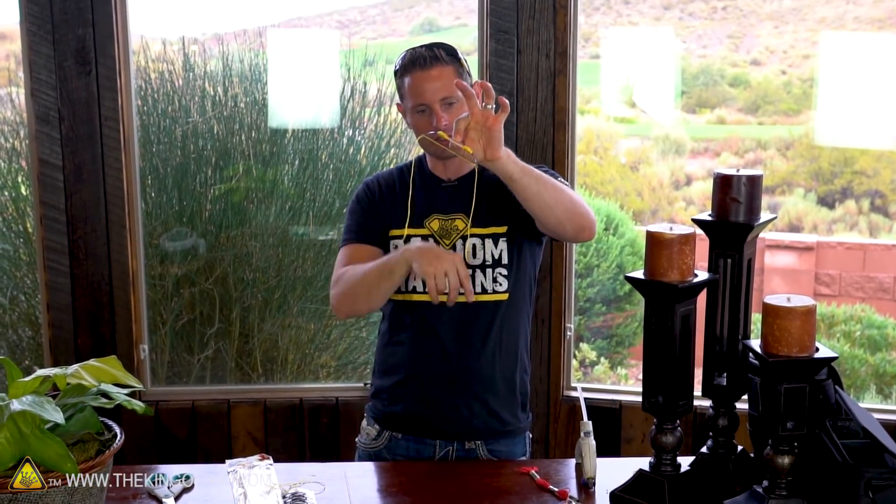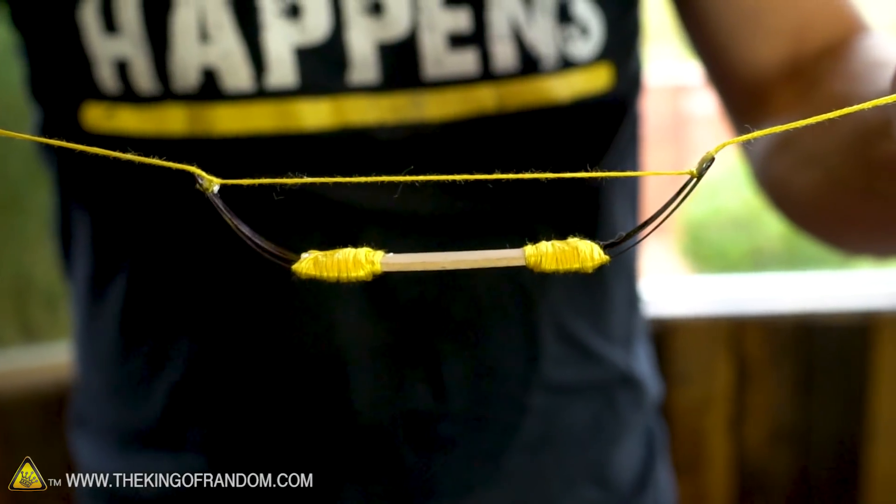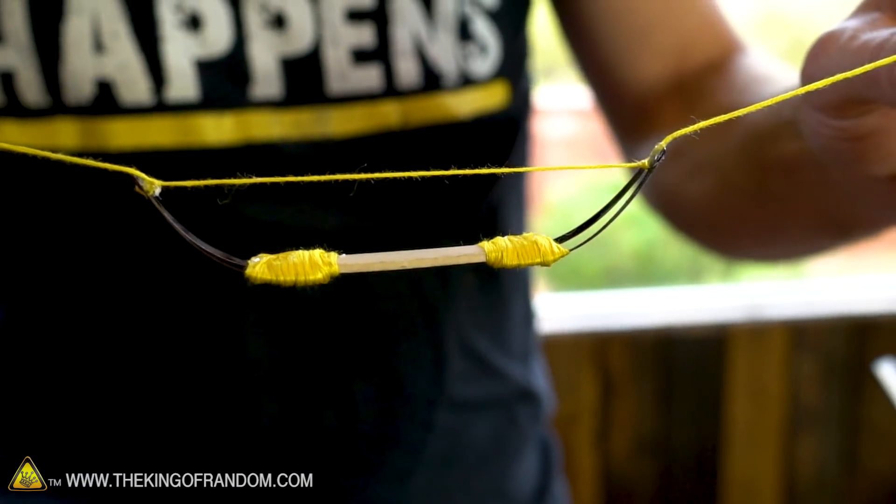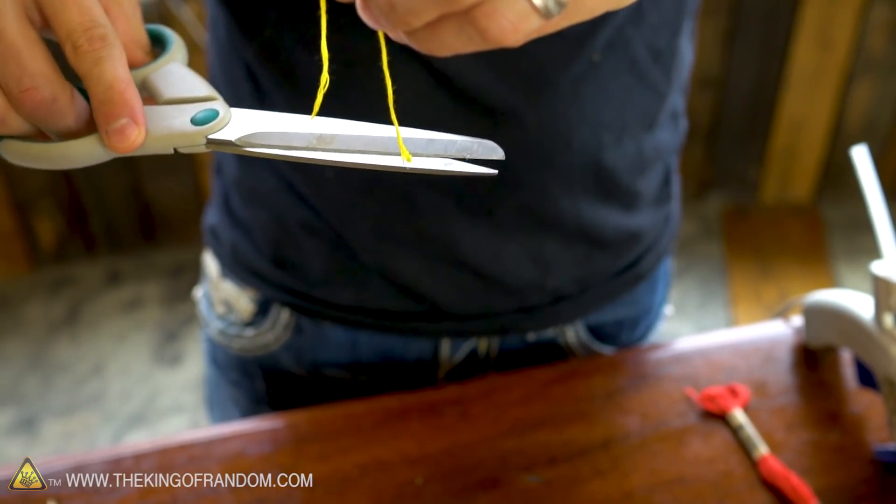So here we are guys, at this point our micro longbow is just about complete. We've just got these long strings flipping off the end here, but because they're glued in place and double-knotted, we can very easily snip those off with a pair of scissors and reuse this material to make some silencing tassels for the bowstring itself.